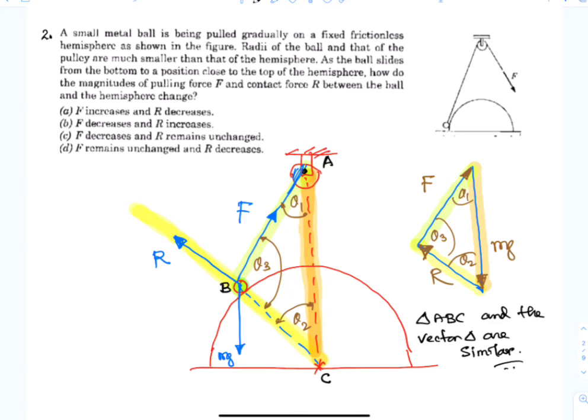Hence you see that as they are similar, this distance AC is constant and distance BC is constant. So this mg is constant, and so is the normal reaction constant.